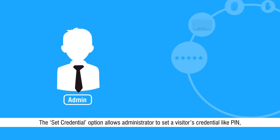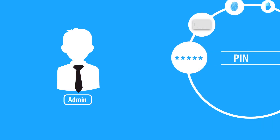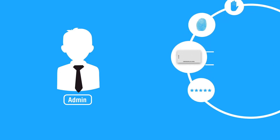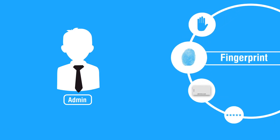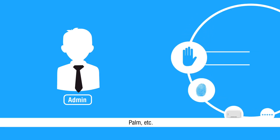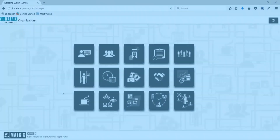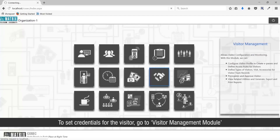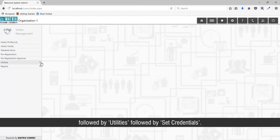The Set Credentials option allows administrators to set a visitor's credentials like PIN, RFID, fingerprint, palm, etc. To set credentials for the visitor, go to the Visitor Management module, followed by Utilities, followed by Set Credentials.